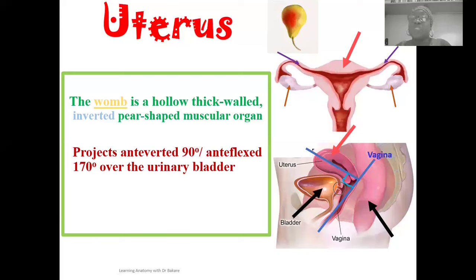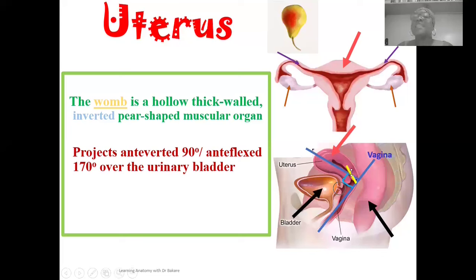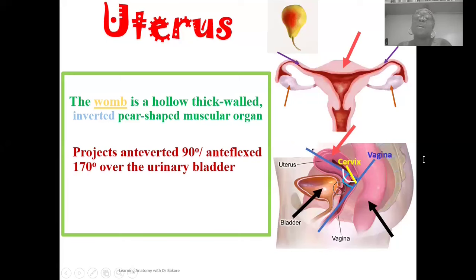If you take the position of the uterus in respect to the cervix — the cervix is the inferior region of the uterus — and take an alignment along its vertical axis (highlighted in yellow), you see that the uterus is positioned in an anteflexed position, taking an angle of about 170 degrees (highlighted in white). So if using the vaginal canal it is anteverted, but if using the cervix as reference it is anteflexed — this is the general position of the uterus.